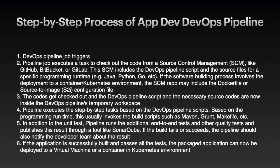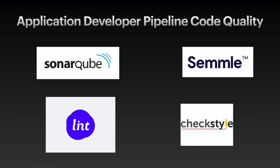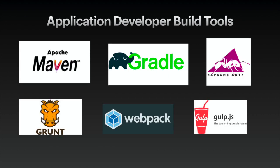Step six, if the application is successfully built and passed all tasks, the packaged application can be deployed to a virtual machine or a container in a Kubernetes environment. Application developer DevOps pipeline technology stacks: many tools used by application developer-focused pipelines are similar to those of infrastructure-focused pipelines. One addition is a code quality tool. A few examples of code quality tools are: SonarQube, Sonar, Lint, and CheckStyle. To build the software, you also need a build tool; the recommended build tools differ based on the programming runtime.